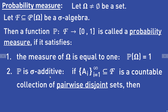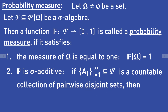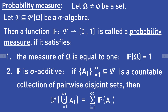The second property is that P is sigma additive. That means if the sets Ai are a countable collection of pairwise disjoint sets in the sigma algebra F, then the probability of the union of these sets is equal to the sum from i equals one to infinity of the probabilities of Ai.